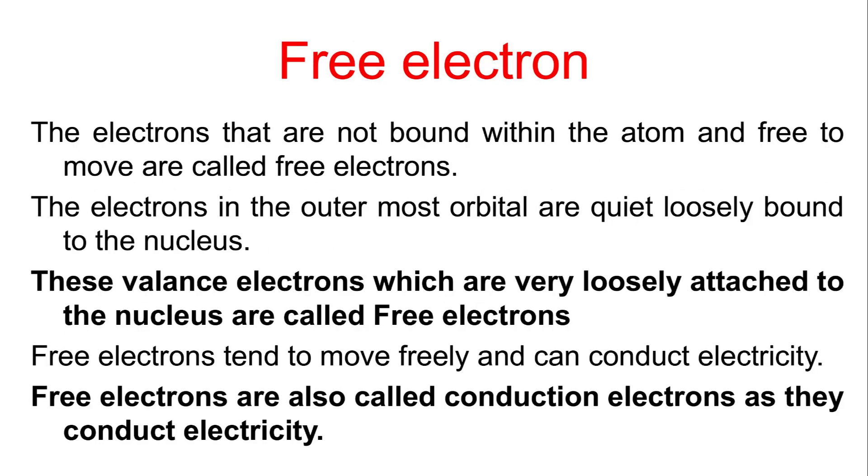Free electrons: The electrons that are not bound within the atom and free to move are called free electrons. The electrons in the outermost orbital are quite loosely bound to the nucleus. These valence electrons, which are very loosely attached to the nucleus, are called free electrons.